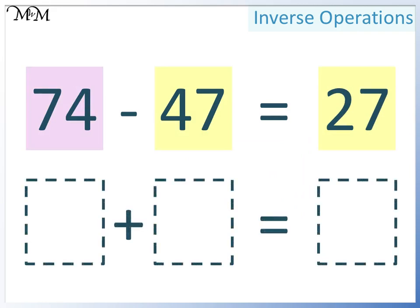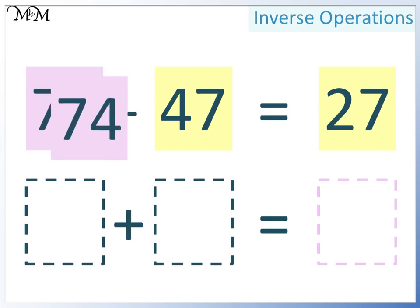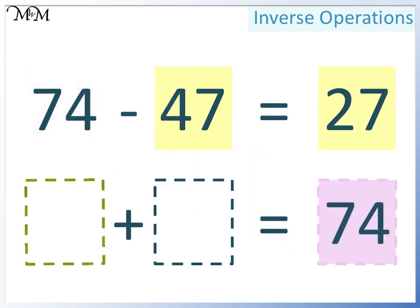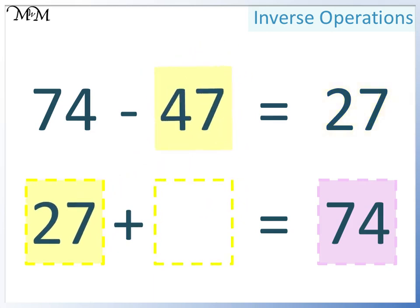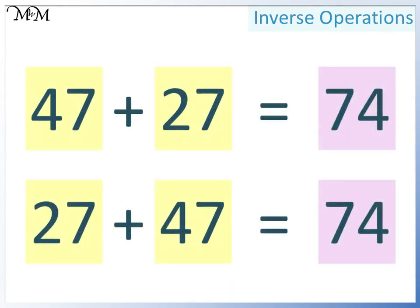Let's see how we can write this another way. Remember, two smaller numbers add together to make a larger number. Again, the largest number is 74, so it must go here. In this space we can have either of the two smaller numbers; this time we'll have 27, and so in this space we must have 47. 27 add 47 equals 74. The two additions are 47 plus 27 equals 74, and 27 plus 47 equals 74. In both calculations the two smaller numbers added together to make the larger number.